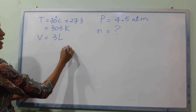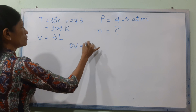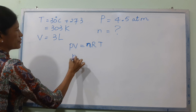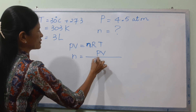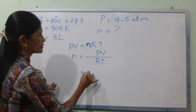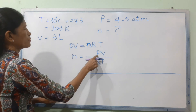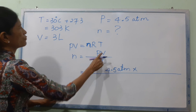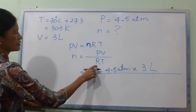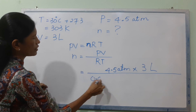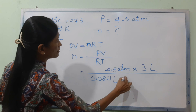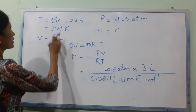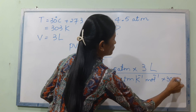PV equals nRT. This is PV over nRT. The values are: P = 4.5 atm, V = 3 L, R = 0.0821 L·atm per mol·K, T = 303 Kelvin.